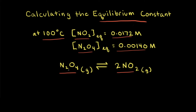To calculate the equilibrium constant for this reaction at 100 degrees Celsius, we first need to write the equilibrium constant expression. We can write it using the balanced equation. We start by writing the equilibrium constant, symbolized by K. Since we're dealing with concentrations, we're calculating Kc. Kc is equal to products over reactants.